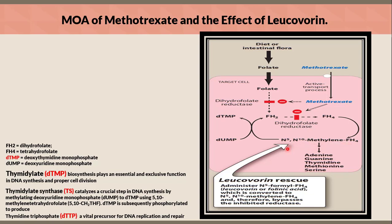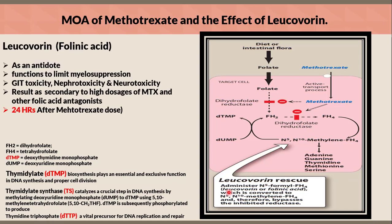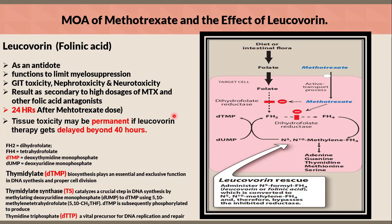The N5N10 methylene tetrahydrofolate is crucial to form adenine, guanine, thymidine, methionine, and serine. Leucovorin rescue: leucovorin (folinic acid) acts as an antidote, functioning to limit myelosuppression, GI toxicity, nephrotoxicity, and neurotoxicity resulting from high-dose methotrexate and other folic acid antagonists. It should be administered 24 hours after the methotrexate dose, delivering N5-formyl tetrahydrofolate (leucovorin/folinic acid), which is converted to N5N10 methylene tetrahydrofolate, thereby bypassing the inhibited reductase. Tissue toxicity may be permanent if leucovorin therapy is delayed beyond 40 hours.